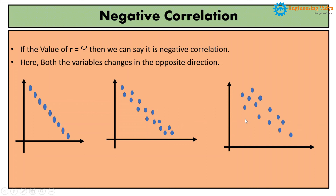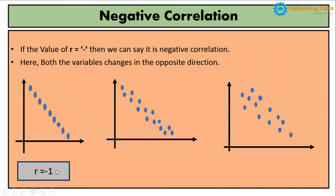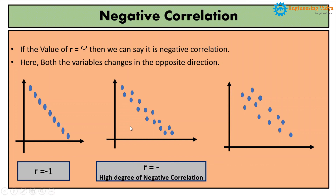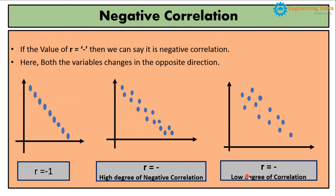Now the last example of negative correlation: here also as soon as I increase the value of x, y decreases. But comparing this with the previous graphs, here the samples are spread over the graph, so it has a very low degree of negative correlation. Mathematically, in the first case where 100% of samples follow the pattern, the value of small r equals minus one. In the second case we get a high degree of negative correlation, and the third is a low degree of negative correlation. But in all three cases we get a negative value.